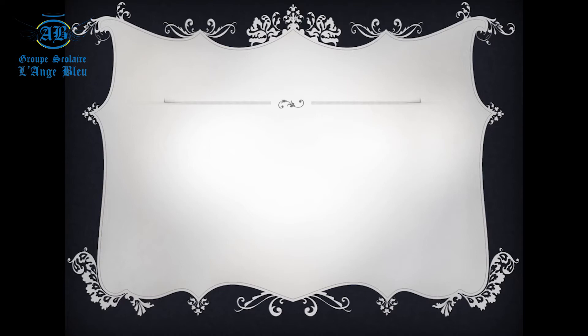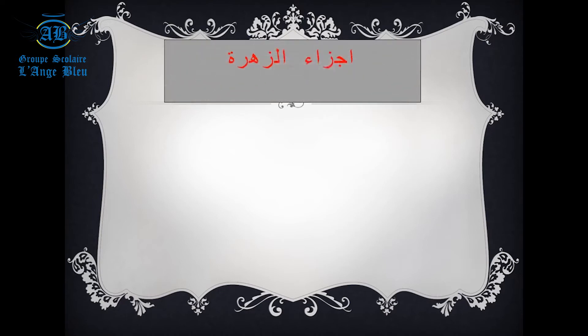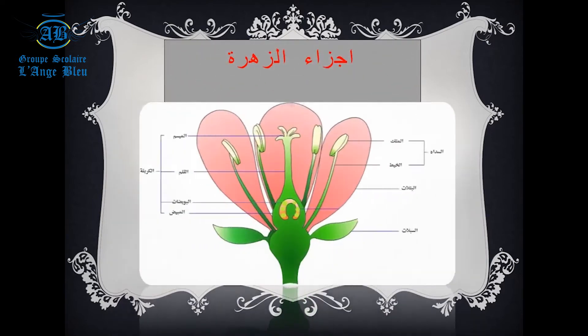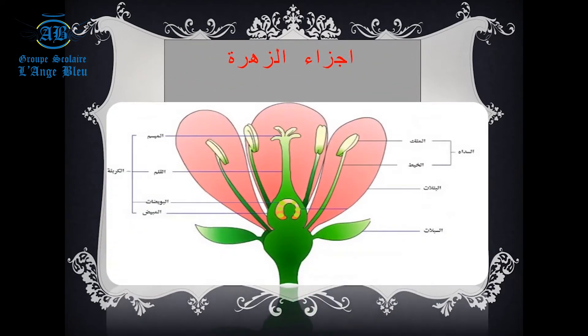الآن سوف نتعرف على أجزاء الزهرة. تتكون الزهرة من أربعة أجزاء رئيسية وهي: الأسدية، البتلات، السبلات، والمدقة.